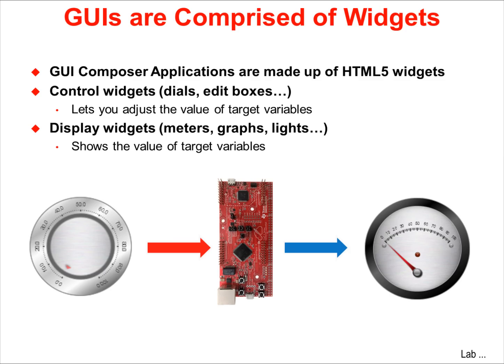When a control widget like a dial or slider has been connected to a target variable or address, any adjustments made to the widget will result in a change in that variable or location in the target system. For example, you could use a dial to change a variable that controls the speed that a motor is spinning. When a display widget like a gauge or graph is connected, the value is read from the target system and displayed in the widget.